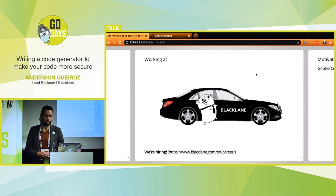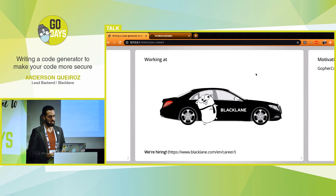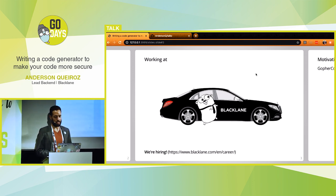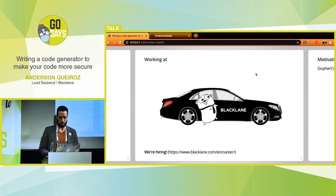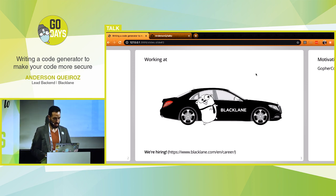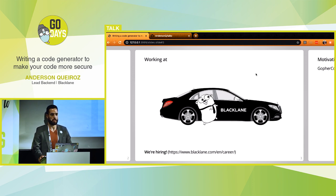I'm working at Black Lane — we are in the travel industry and our mission is to make global top-quality travel reliable and accessible by the touch of a button. We are hiring, so you can check out our website or talk to me later. At Black Lane I'm helping in the transition to migrate the company from Ruby to Go.